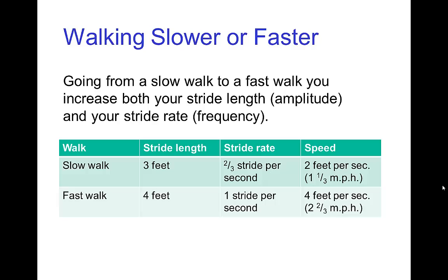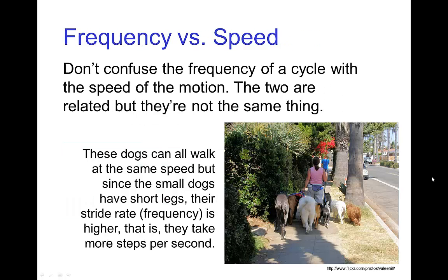That's an example of how speed is related to both amplitude and frequency for cyclic motion. It's important not to confuse frequency of the cycle with the speed of the motion — they're related, but not the same thing. For example, if dogs walk together at the same speed, small dogs with short legs take shorter strides and therefore need a higher stride rate. They take more steps per second, yet all the dogs travel at the same speed.